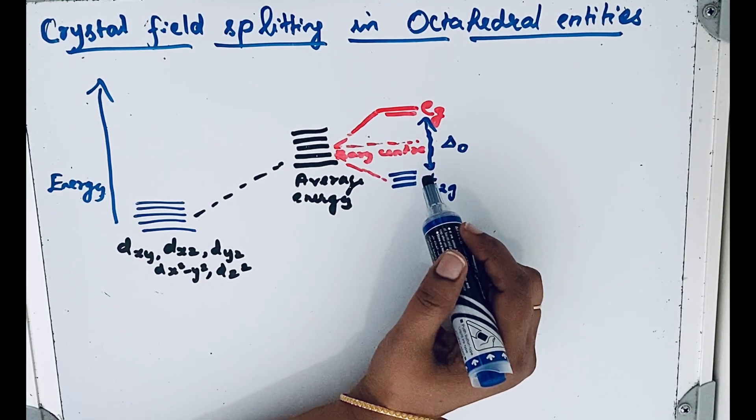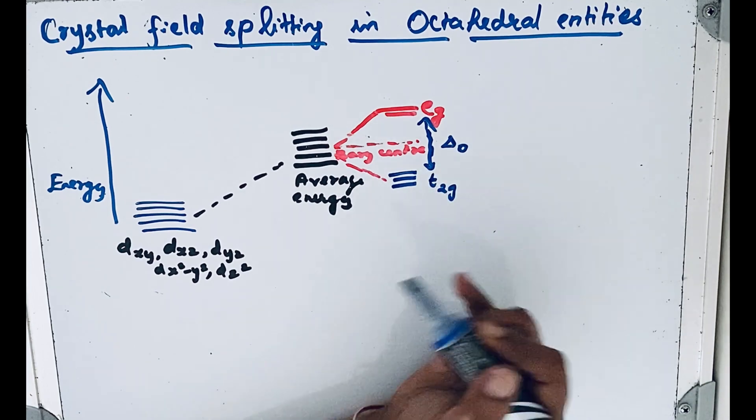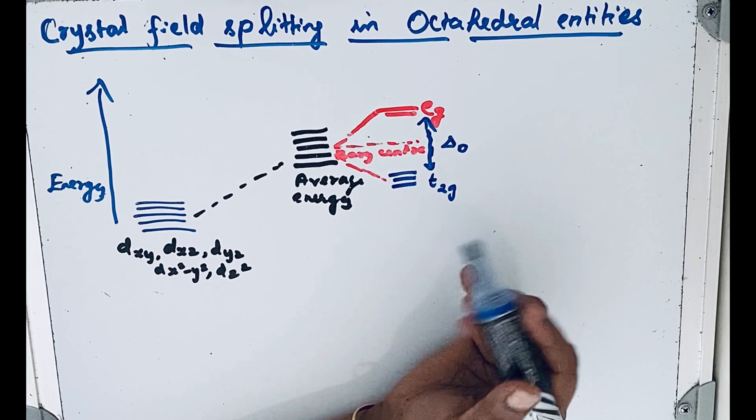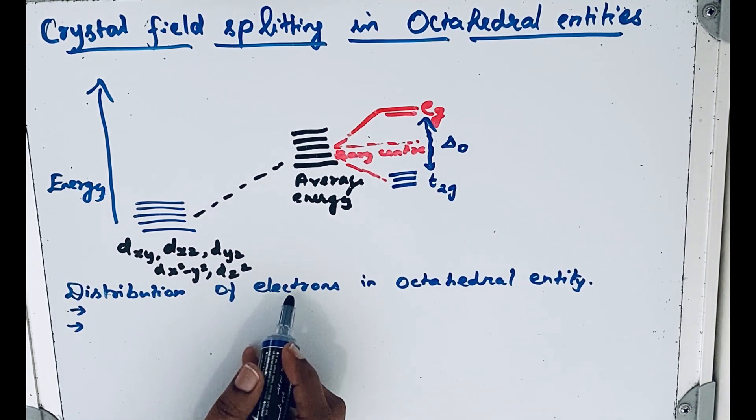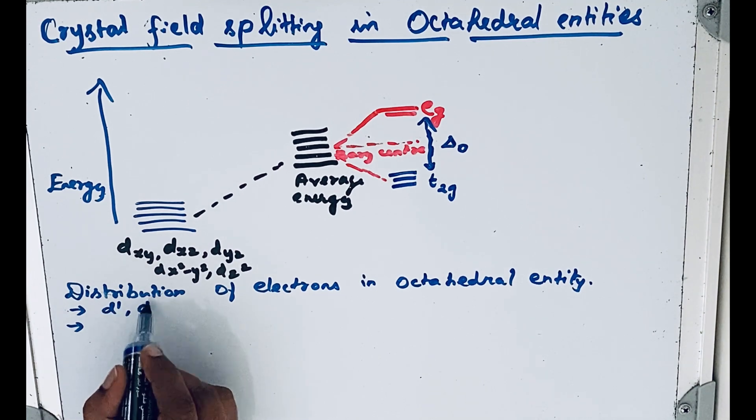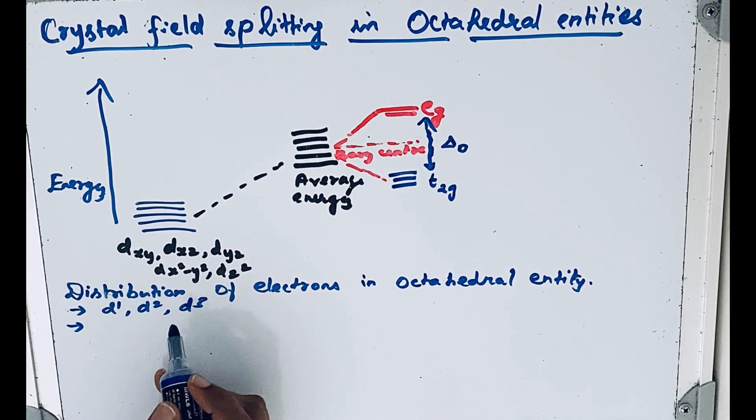Now, using that, let us see the distribution of electrons in d orbitals of metal ions for octahedral coordination entities. For d1, d2, and d3 configurations, there is no problem—they can directly go to the low-energy t2g orbitals.